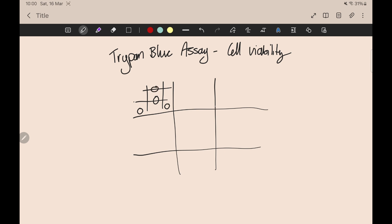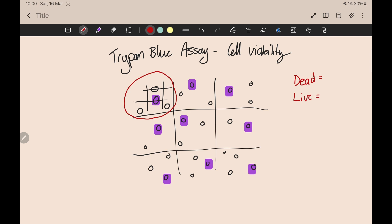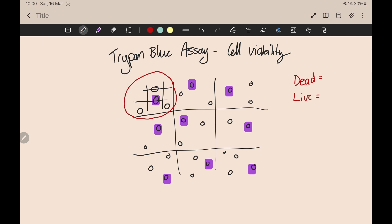Quickly draw in some cells here. And remember, you've done trypan blue staining. So some of these cells are going to be stained and some of them won't. So you start with the top left corner up here. And you count how many live cells and how many dead cells there are. Dead, live. So remember, the live stained cells are the unstained ones. So there are three of those. And the dead cells are the stained ones. There's one of those. So that's in the top left box, right? TL, top left.